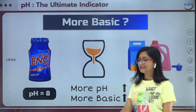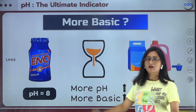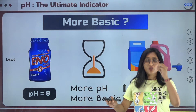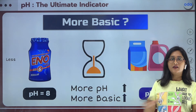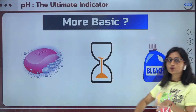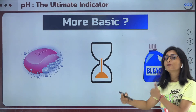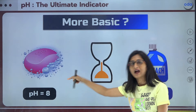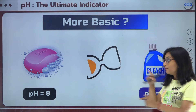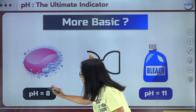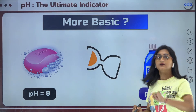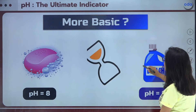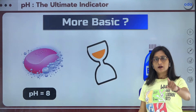Remember: less pH means more acidic, more pH means more basic. Let us test one more — soap and bleach. The pH value of soap is 8 and the pH value of bleach is 11. Which one is more basic? More pH means more basic, so bleach is going to be more basic as compared to soap.